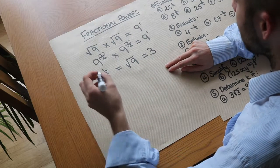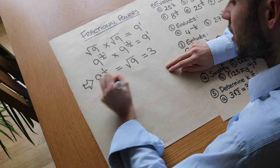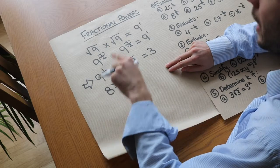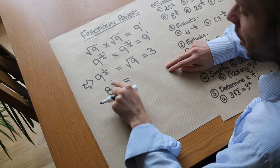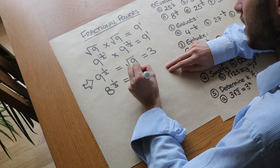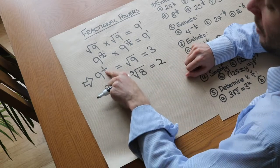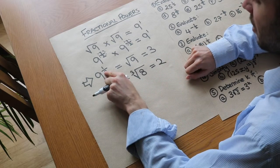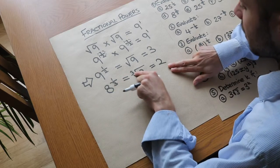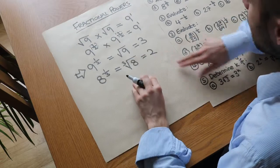Similarly, a power of a third does the cube root. So 1 over 2 gives the square root, and 1 over 3 gives the cube root — for example, the cube root of 8 is 2. A power of a quarter would be the fourth root, and so on. Importantly, 9 to the power of half does not mean 9 times a half; it means we take the square root.